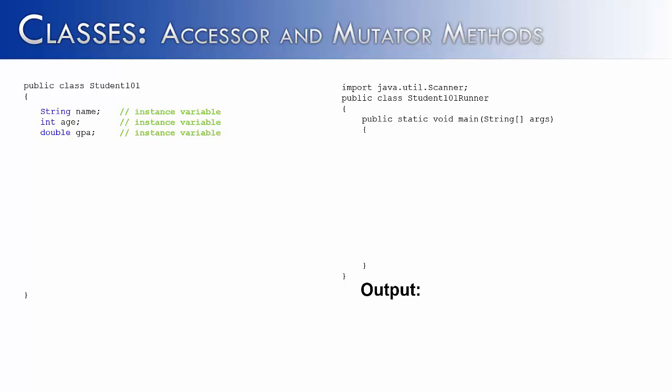I want to continue our discussion on instance variables and talk about how to access those instance variables. I've created two classes, one called Student101 and the other Student101Runner. Inside the Student101 class, I've created three instance variables: name, age, and GPA.